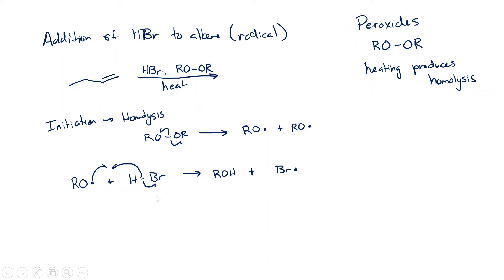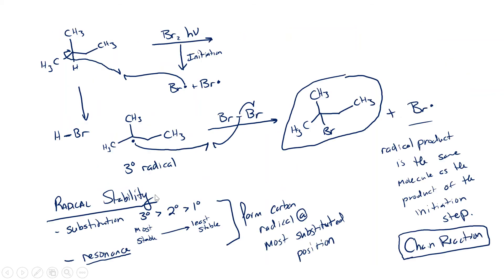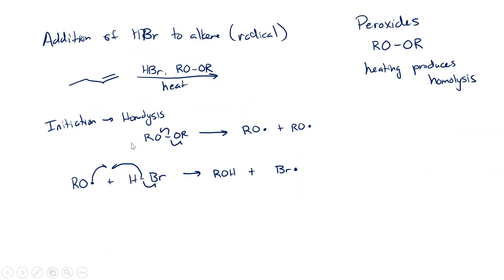This is very similar to what happened in the previous reaction. After initiation, the first thing the radical did was go find a hydrogen to grab. It grabbed that hydrogen and created a different radical. We're doing the same thing here, only instead of making a carbon radical, we're making a bromine radical.